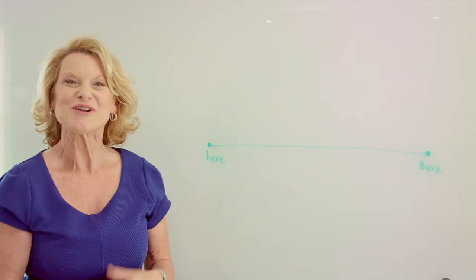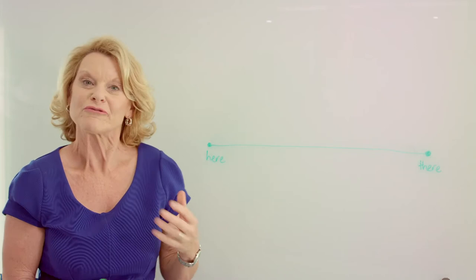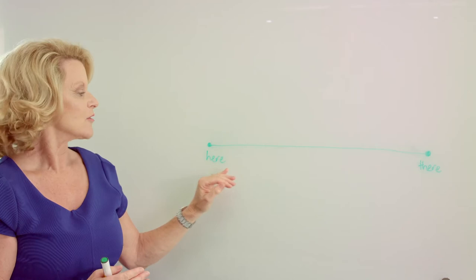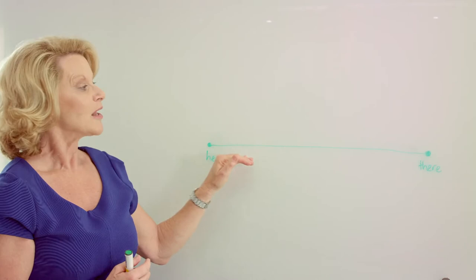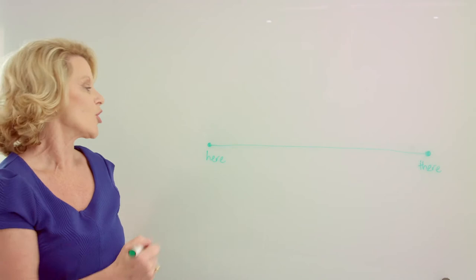It references the straight line that is the most direct, energy efficient, and cost effective route from here, the starting position, to there, the final destination. Pilots call this straight line the green line. Interestingly though, the plane only spends 10% of its time on the green line. 90% of the time it's fluctuating above and below that line.